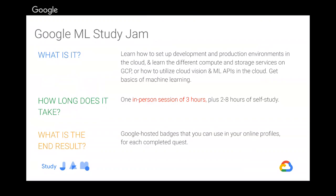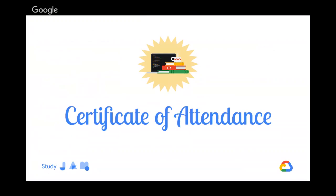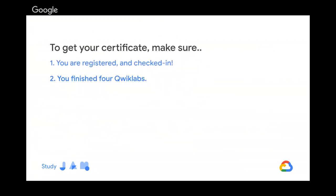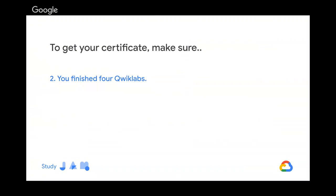You can also get one month free access to the TensorFlow on Google Cloud Platform course on Coursera. In order to get the certificate of attendance, you have to be registered and checked in, finish the four QuickLabs, and fill out the feedback form. I will provide all the links at the end of this presentation. When you finish the four QuickLabs, you will get one month access to the Coursera specialization of TensorFlow on Google Cloud Platform.